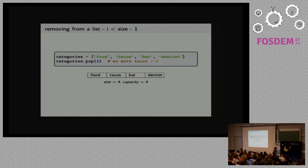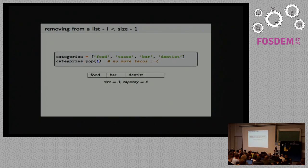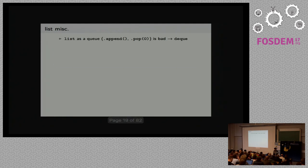Let's go with an example. We have this list and we want to remove tacos — who wants to do that anyway? We have size equals four, capacity equals four. We pop the item at index one. First, we call memmove. It's going to shift bar and dentist one slot to the left. Now we have two dentists and the size is still four, capacity still four. Next, resize is called to take care of removing the last entry — dentist. Now we don't have that duplicate dentist anymore. The size is three, and three is between two and four, so the invariant is respected. The list has size three and has room for one more item in the future.